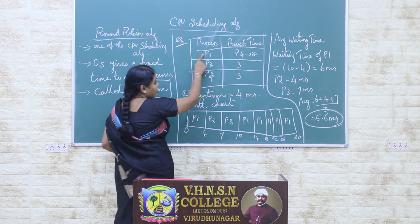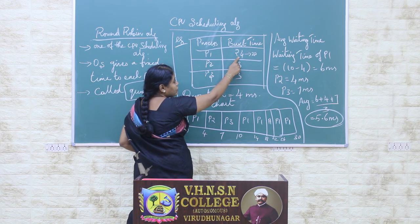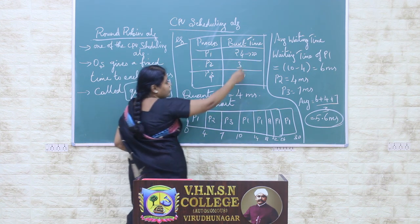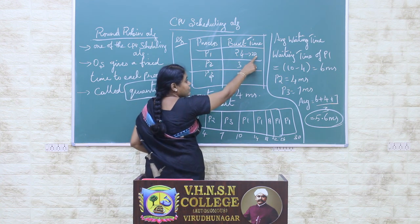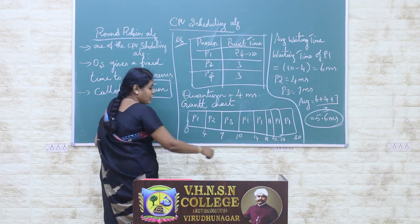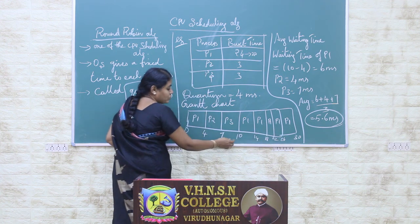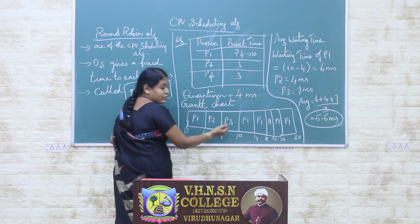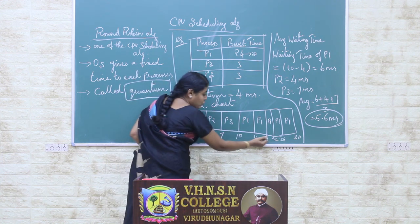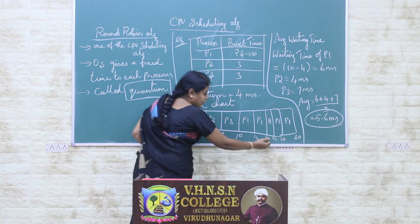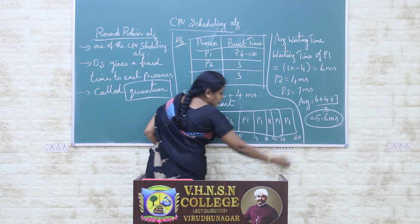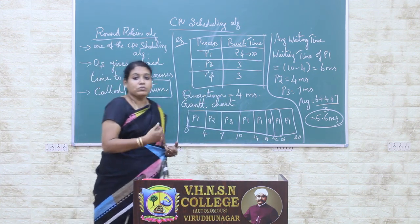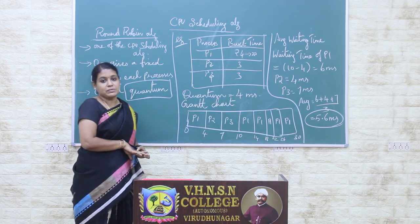The remaining process is P1, which had a burst time of 24 milliseconds. In the first cycle, it executed for 4 milliseconds, so it has 20 milliseconds remaining. Those 20 milliseconds are executed in quantum periods: from 10 to 14, 14 to 18, 18 to 22, 22 to 26, and 26 to 30 milliseconds. So from 10 to 30 milliseconds, P1 occupies the CPU to finish its work, since its burst time is 24 milliseconds.